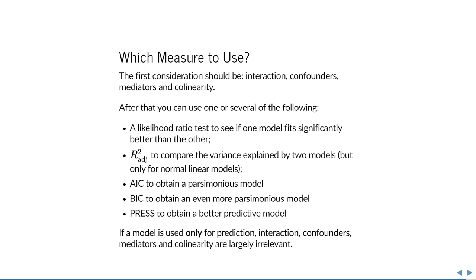The first consideration should always be interactions, potential confounders, potential mediators, and potential collinearity. Only after making those considerations can you use these measures to guide the process: likelihood ratio test, adjusted R-squared (only for normal linear models), AIC for a parsimonious model, BIC for an even more parsimonious model when N is large enough, or the PRESS statistic for the better predictive model.